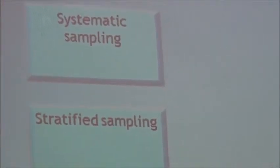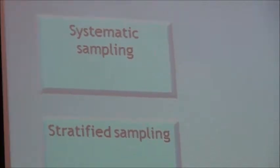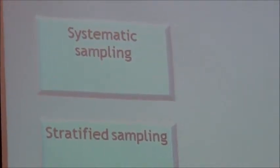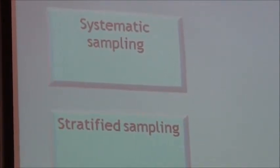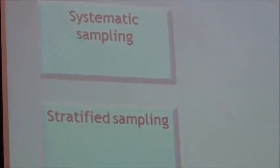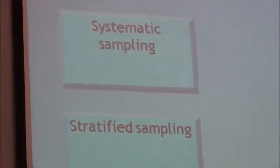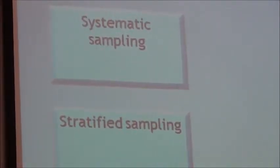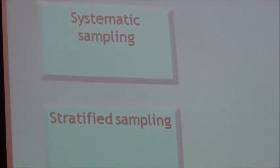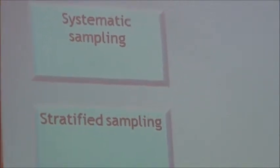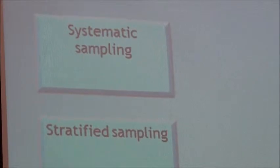Or you can say you'll choose every 10th element, giving you 10 elements in the sample. You can choose the size of the sample first and let that tell you which elements to choose, or choose the interval first. The potential problem is that a rhythm pattern in walking through the data could identify elements with a particular characteristic you weren't aware of. Systematic sampling allows you to systematically choose every kth element once you've set the sample size.